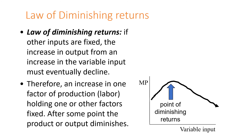The law of diminishing returns states that if other inputs are fixed, the increase in output from an increase in the variable input must eventually decline. Therefore, an increase in one factor of production such as labor, holding other factors fixed, after some point the output must diminish, as can be seen in the graph. The marginal product of the variable input increases to a certain point and then must diminish as productivity goes down.